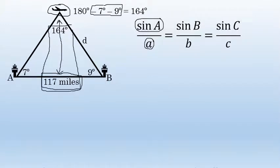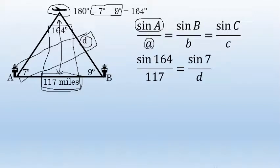Now I know the 164-degree angle with opposite side 117. I'll use this to find distance d between the airplane and Airport B, which is opposite the 7-degree angle. This gives the proportion: sin(164)/117 = sin(7)/d.